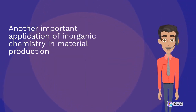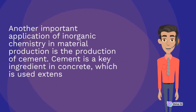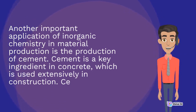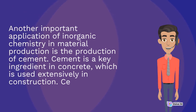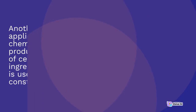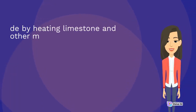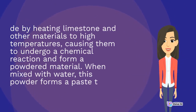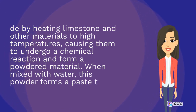Another important application of inorganic chemistry in material production is the production of cement. Cement is a key ingredient in concrete, which is used extensively in construction. Cement is made by heating limestone and other materials to high temperatures, causing them to undergo a chemical reaction and form a powdered material. When mixed with water, this powder forms a paste.